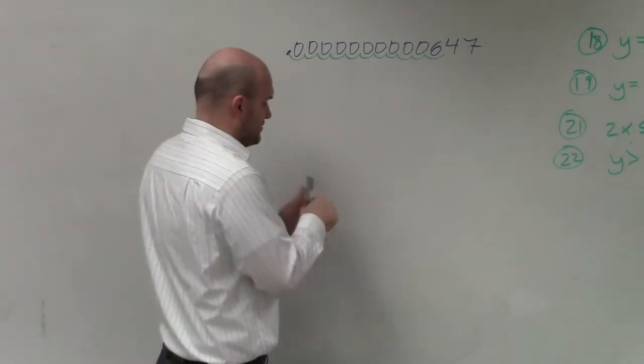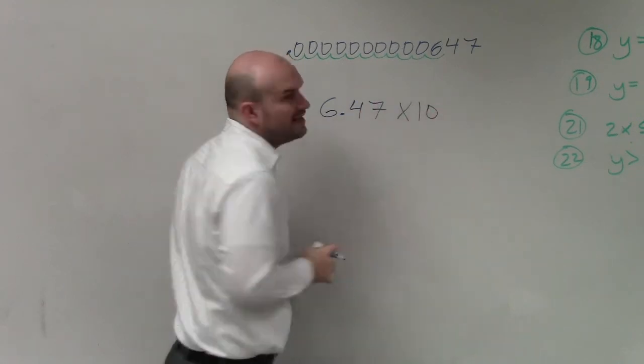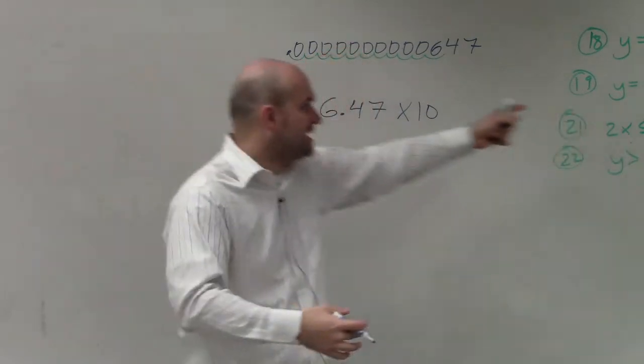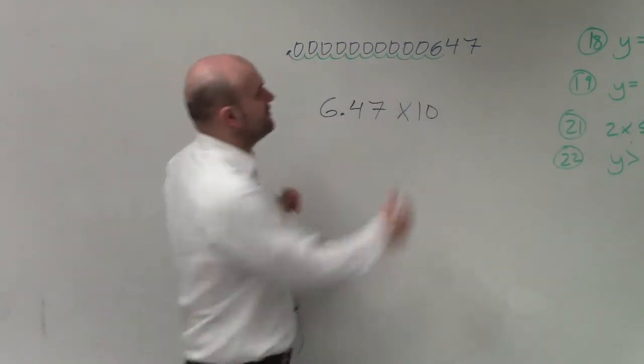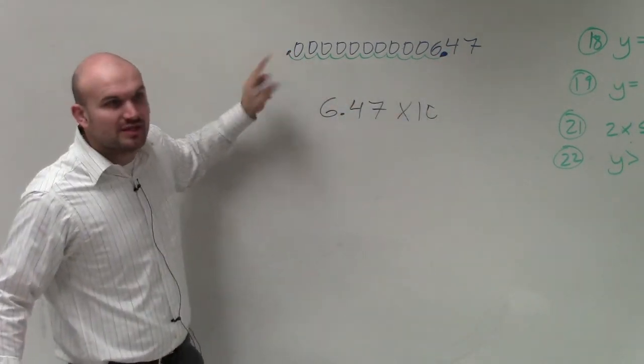So I'll write that out. 6.47 times 10. But how many times do I need to multiply it by 10 to be able to get back to my original number? Well, how far did we move this? So if here's my new decimal point, I want to be able to move it how many spaces to the left?